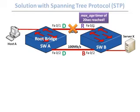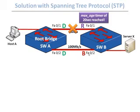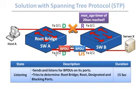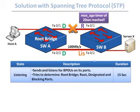If switch B does not receive BPDUs from the root bridge for 20 seconds — the maximum age timer in the BPDUs — it considers there is a change in the network. Switch B must find a new path to the root bridge. Its only other option is F02. To ensure a loop-free topology, F02 goes into a listening state, where the switches exchange BPDUs to determine if there is a new root bridge, new root ports, or other new paths. The listening state typically lasts 15 seconds.